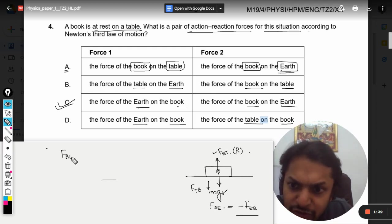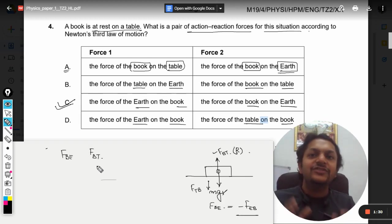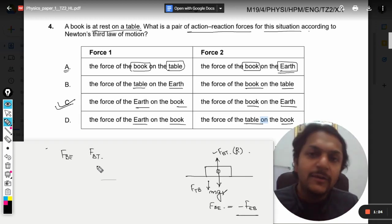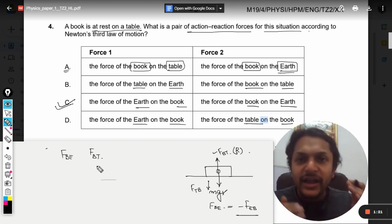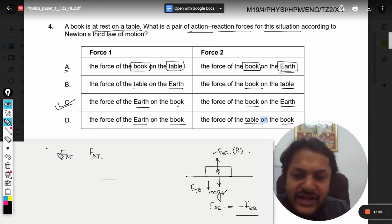The force on book because of earth is not the action-reaction pair with force on book because of table. Otherwise both of them will cancel each other. The action-reaction pairs never cancel each other. Why? Because both of these things they are acting on two different bodies, so they cannot cancel each other. So there will be two action-reaction pairs here.